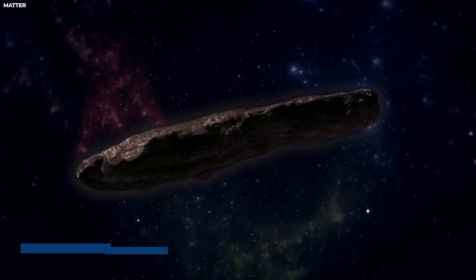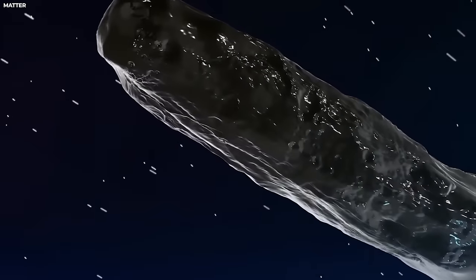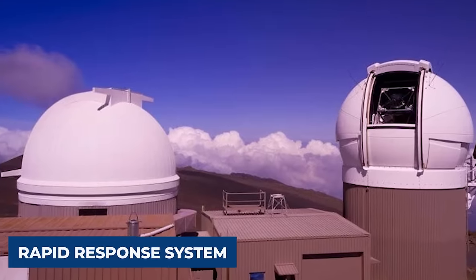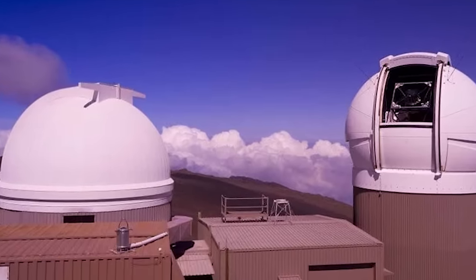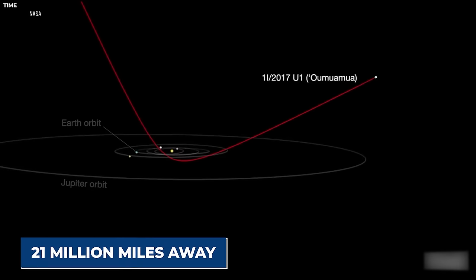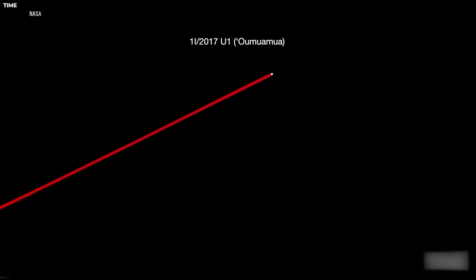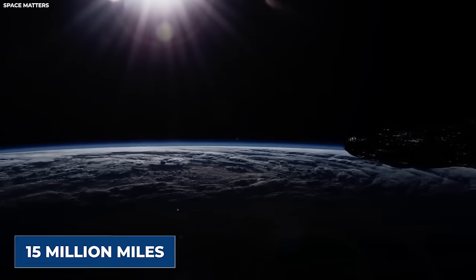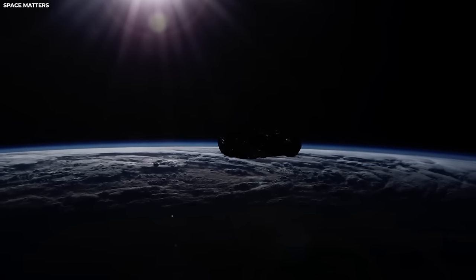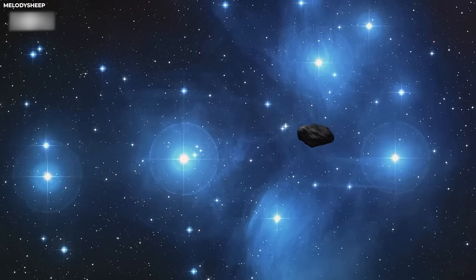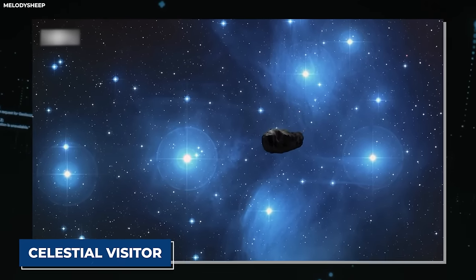The saga of Oumuamua began on October 19th, 2017, when University of Hawaii astronomer Rob Warrick stumbled upon its fleeting presence in data captured by the Vigilant Panoramic Survey Telescope and Rapid Response System. Initially spotted 21 million miles away, its trajectory brought it within a mere 15 million miles of Earth's vicinity, offering a tantalizingly close encounter with our celestial visitor.